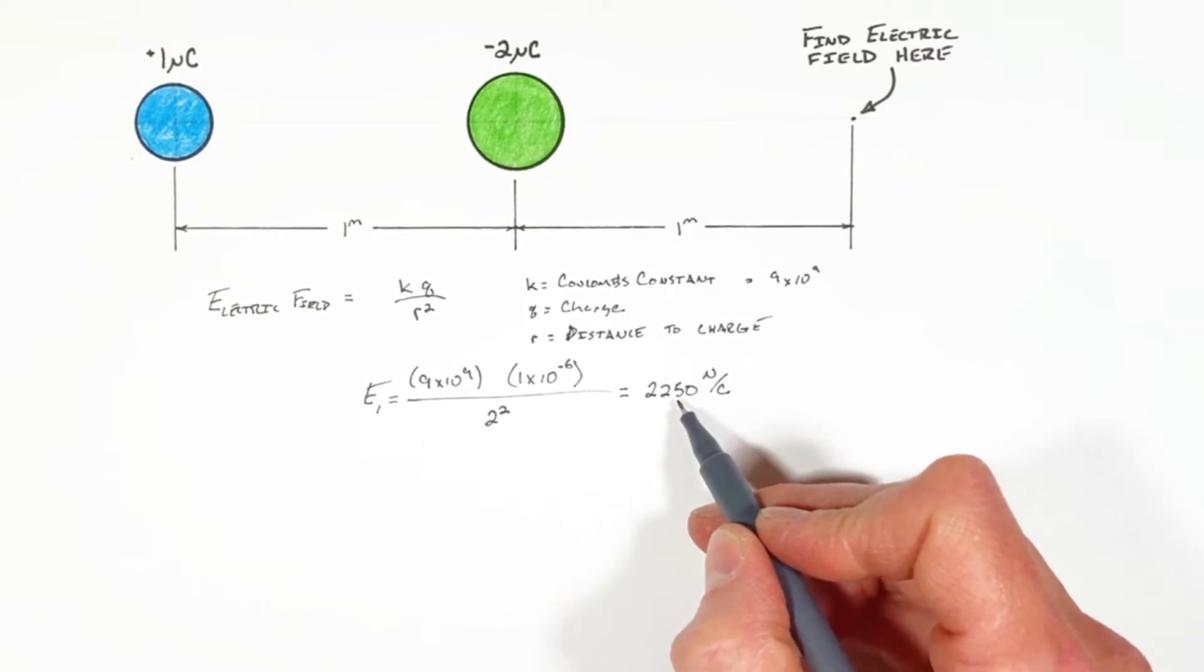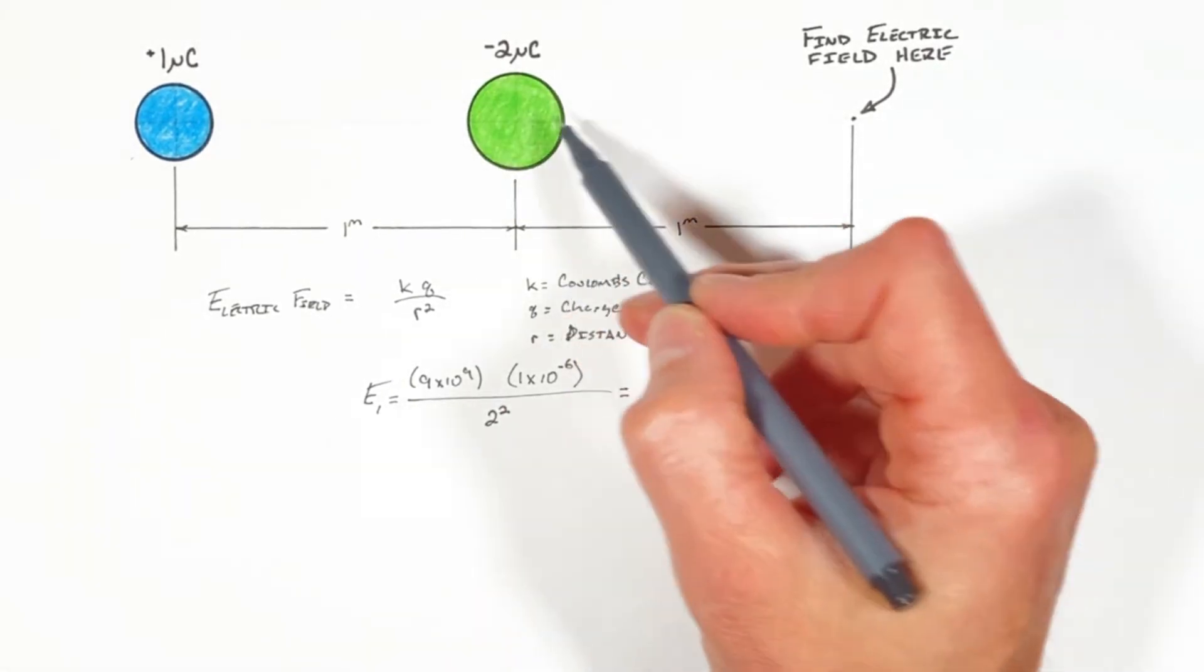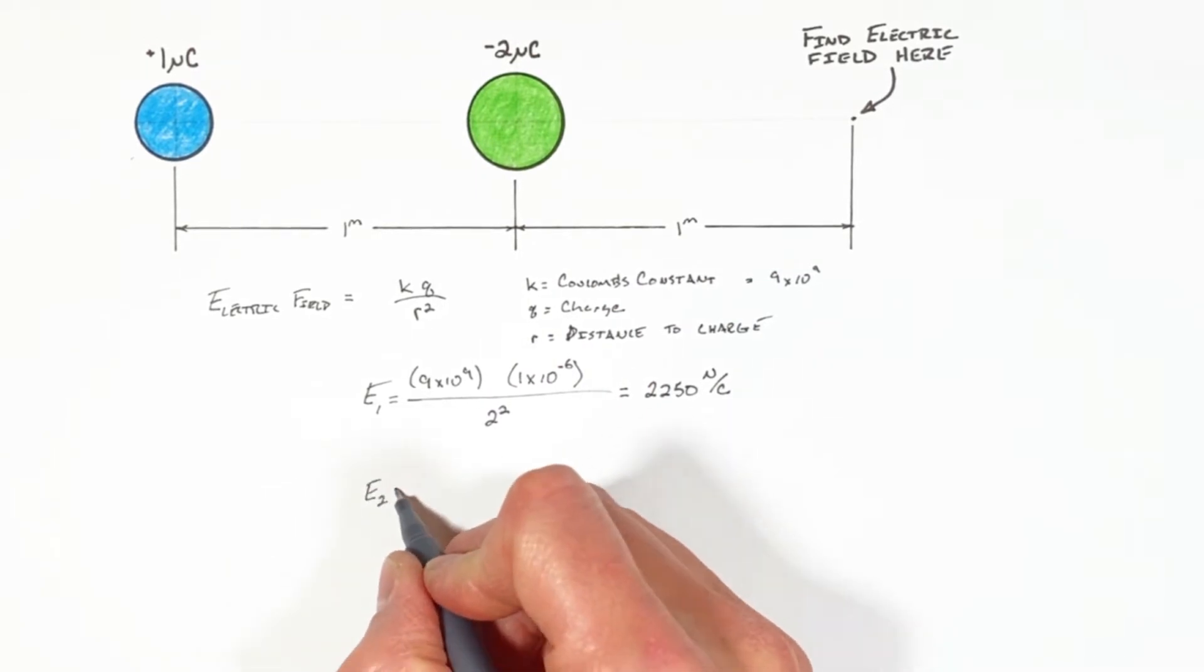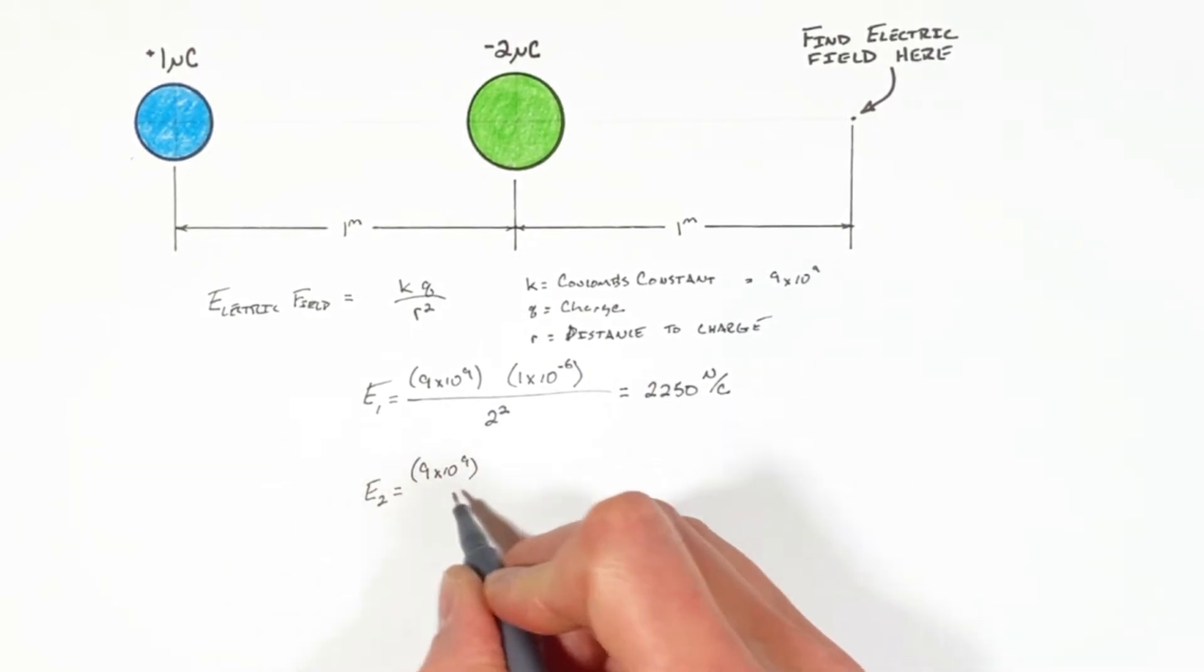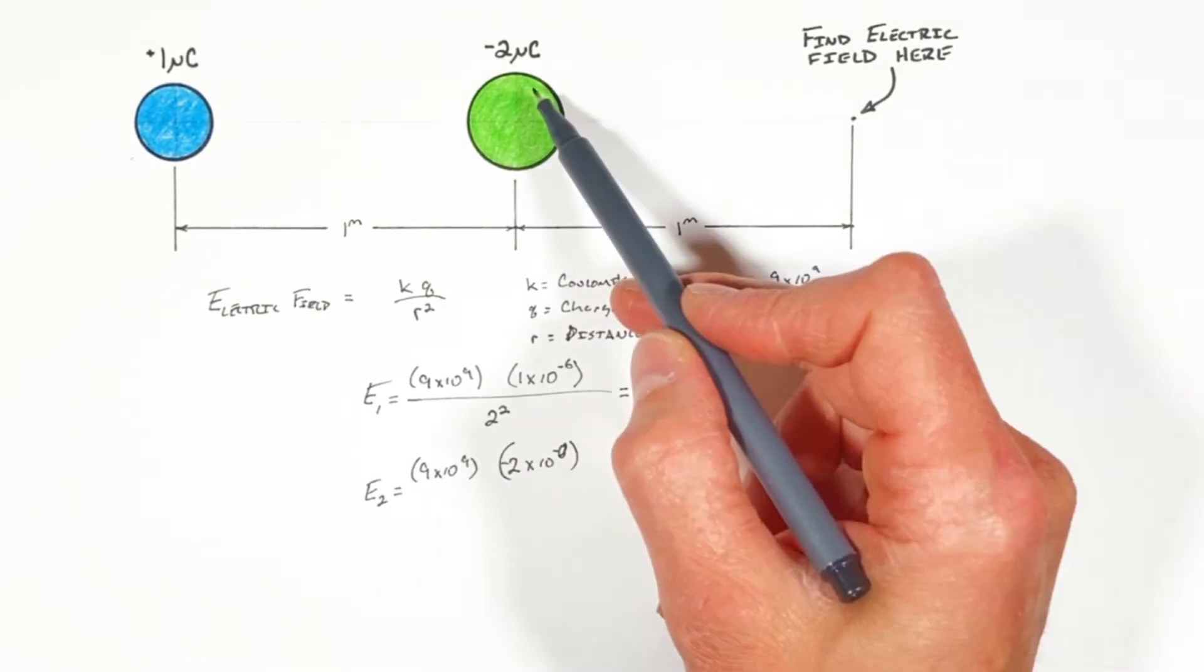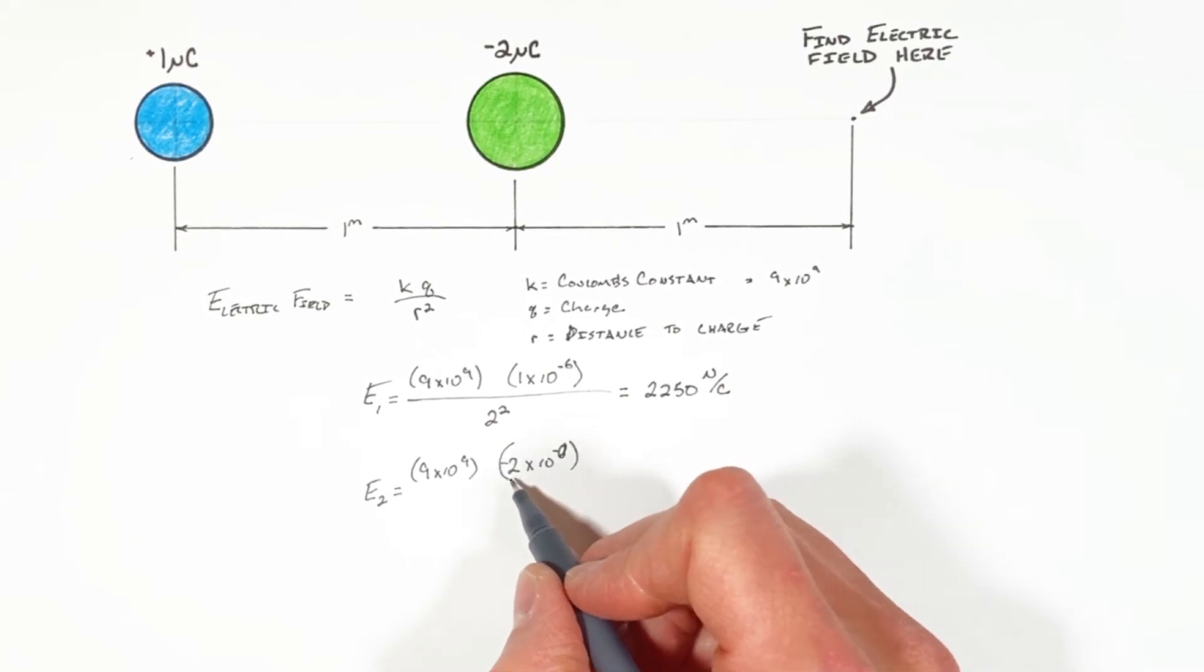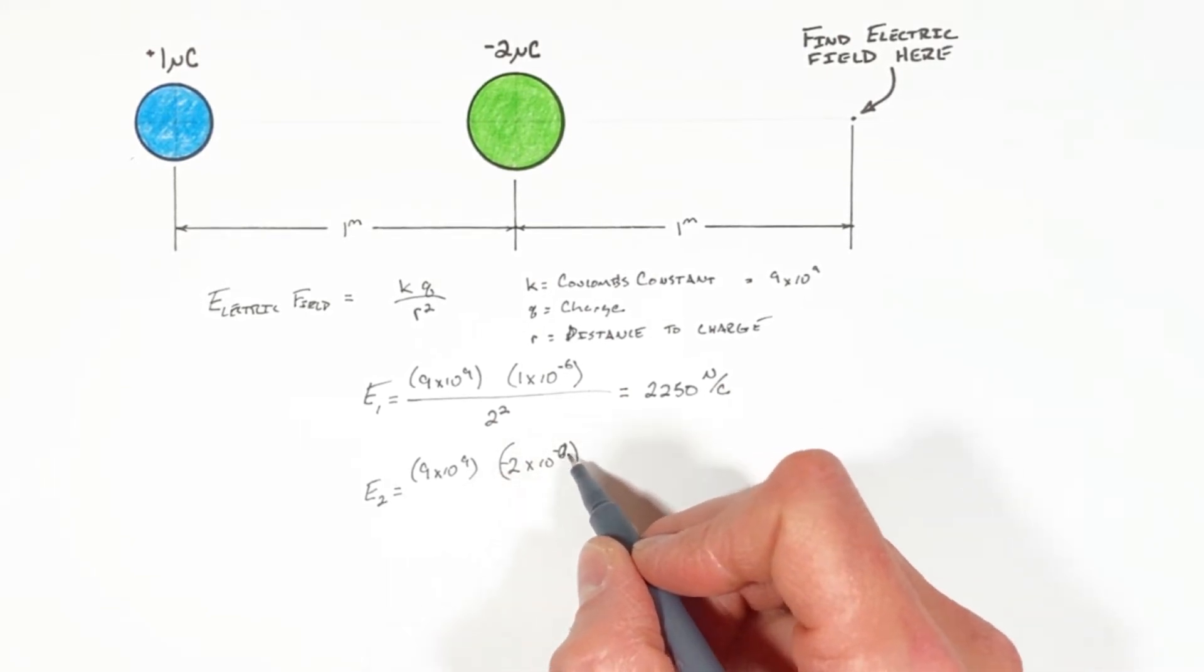Looking next at this charge, we've got Coulomb's constant times the magnitude of this charge, that's negative 2 microcoulombs. So that's negative 2 times 10 to the negative 6. I just drew it kind of poorly.